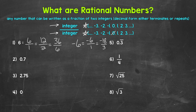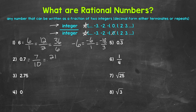Let's move on to number two, where we have a decimal: 0.7. Is this rational? It is a terminating decimal — it cuts off — so right away we can see that this is rational. But can it be written as a fraction of two integers? Yes. 0.7 can be written as 7 over 10, or 21 over 30, or even 70 over 100. So 0.7 can be written as a fraction of two integers, making it rational.